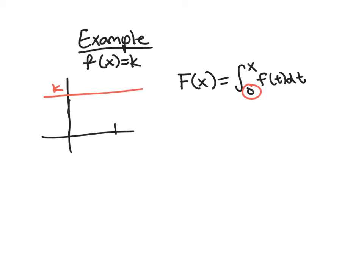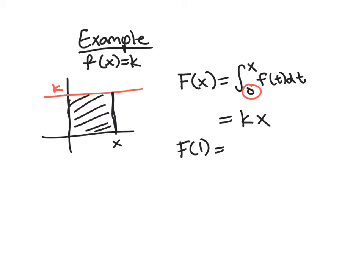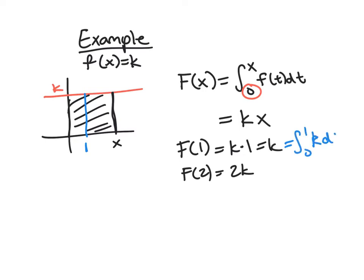Starting at 0 and going to some x, f(x) represents the area of a rectangle. The height is k and the width is x, so the area is kx. For specific values: F(1) = k·1 = k, and F(2) = 2k. We can also verify that F(1) equals the definite integral from 0 to 1 of k dt, which is a rectangle of width 1 and height k — area k.